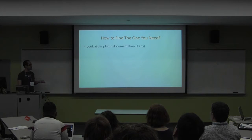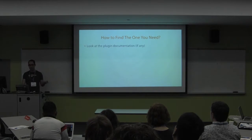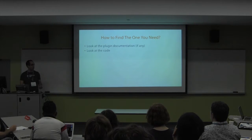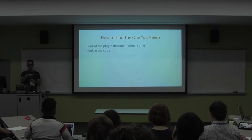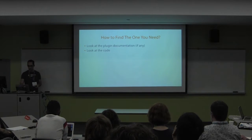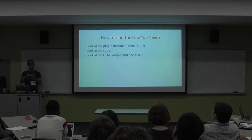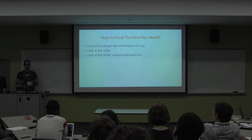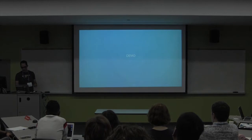How do you find the specific hook you need? Look at the plugin documentation if any exists. There might be comments, or look at forums and Google - Stack Overflow are your friends. You can also look at the code itself: if it's well-structured, it might be obvious where the part you want to change is. And you can look at the output of the plugin and try to backtrack to find an action or filter you can use.